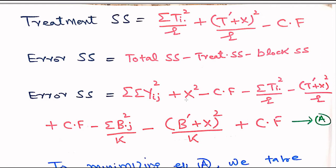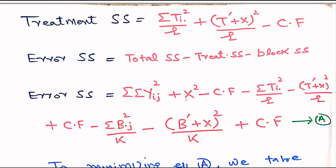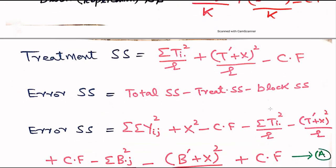Our task is to calculate the error sum of squares, and then we partially differentiate it to get the formula for the single missing observation. For error sum of squares we compute total sum of squares, treatment sum of squares, and block sum of squares. The formula for error sum of squares is: total SS minus treatment SS minus block SS. Substituting the values: total SS includes the yij squared plus x squared minus correction factor, minus treatment SS which includes the sum of ti dot squared over r plus t prime plus x squared over r, plus the correction factor.